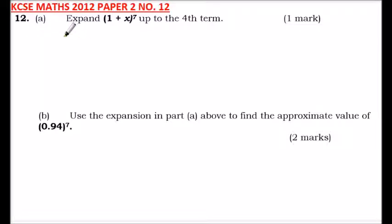Question number 12 of 2012 paper 2: expand (1+x)^7 up to the fourth term. Here you are going to use a binomial expansion.